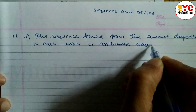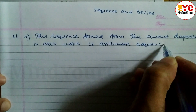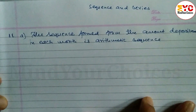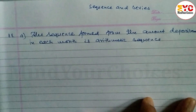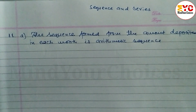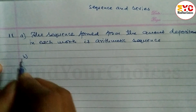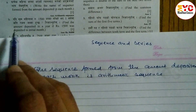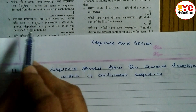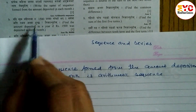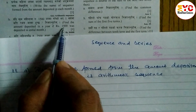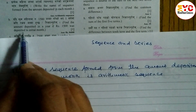The common difference d equals 1,000, because each month the deposit increases by 1,000. So the sequence is an arithmetic sequence. Moving to part B of the question.